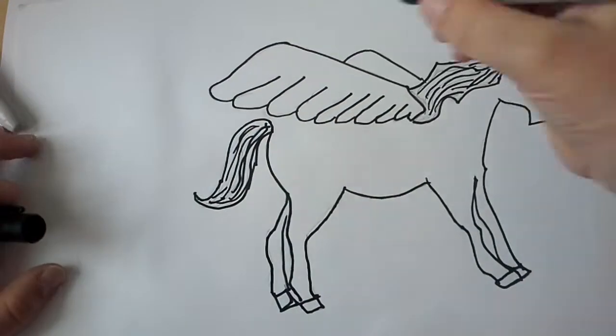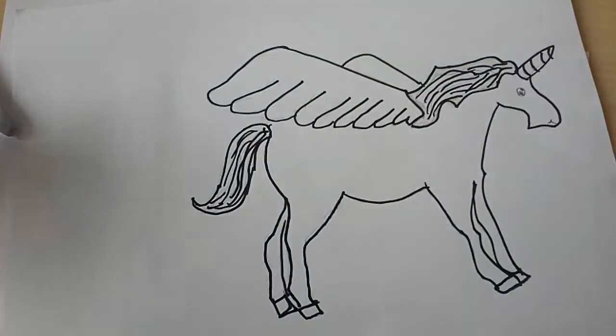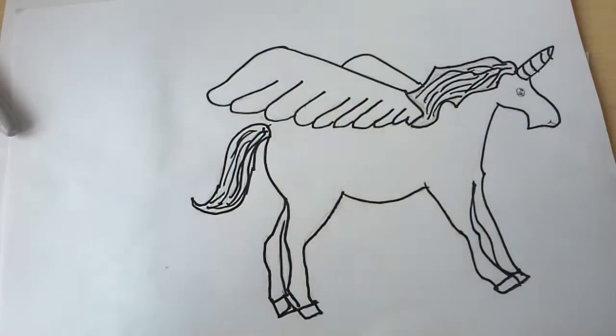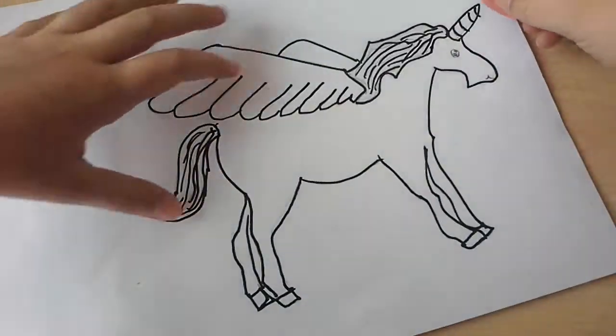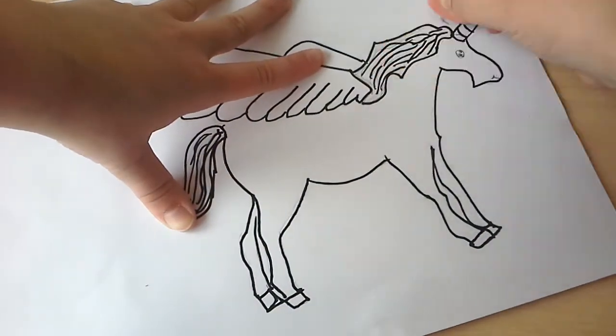Okay, so I think I've outlined it enough. There we go. And now I'm just going to take a really good rubber and erase all the things, all the pencil lines and stuff.